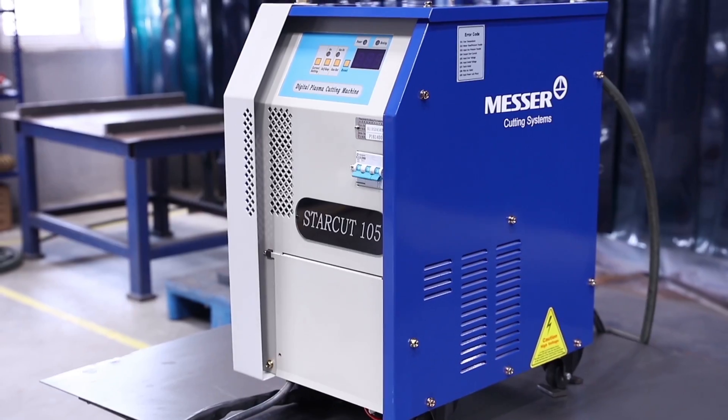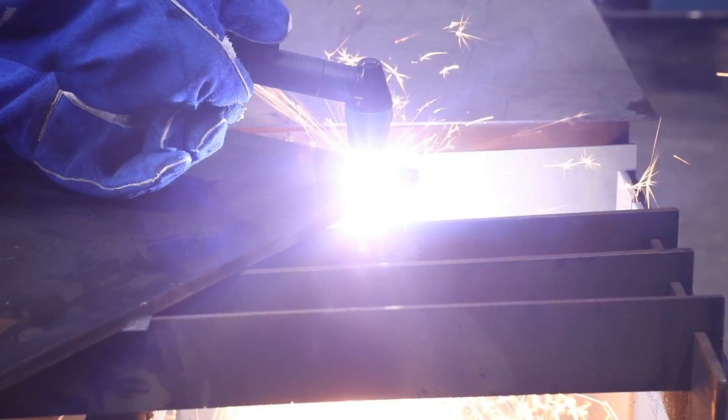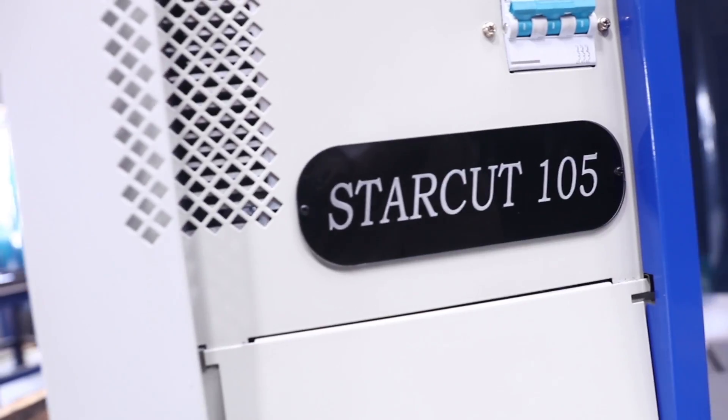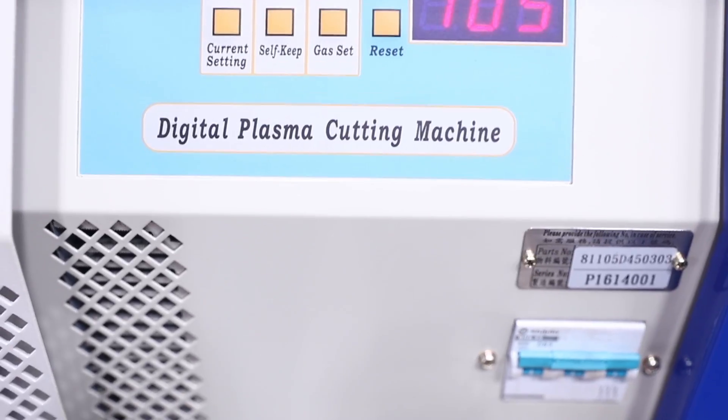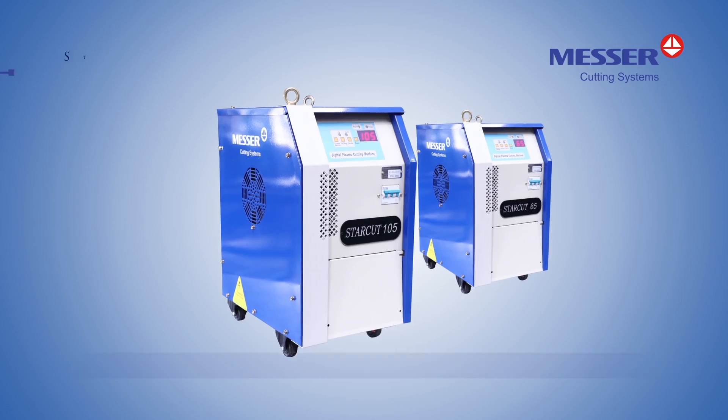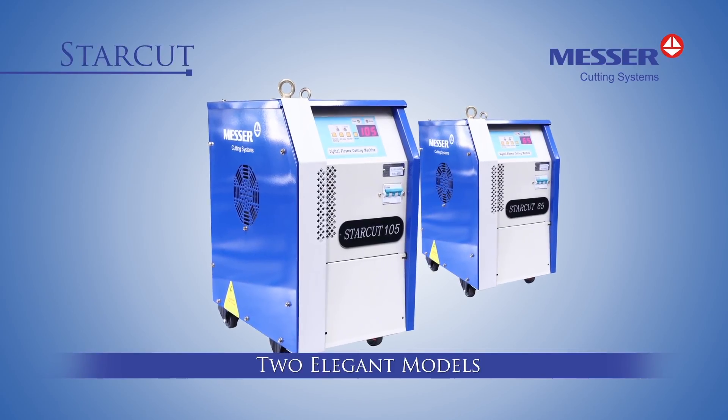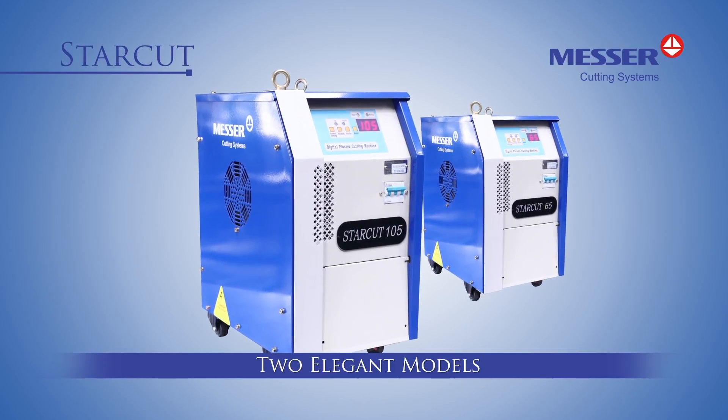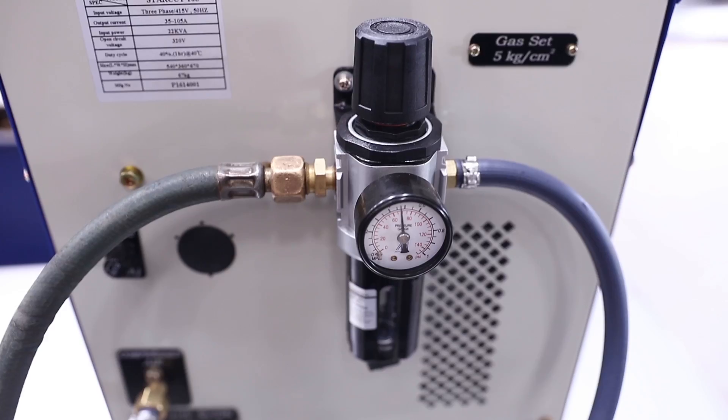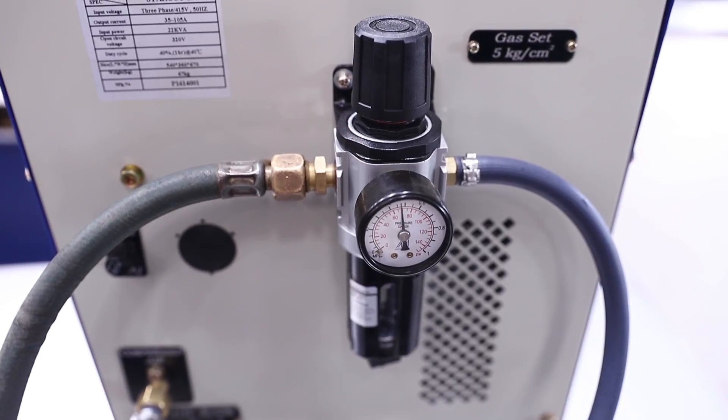MESA StarCut, a superior quality and compact plasma cutter, designed keeping safety as first priority. Comes in two elegant models, StarCut 65 and StarCut 105, both with inbuilt gas regulator.